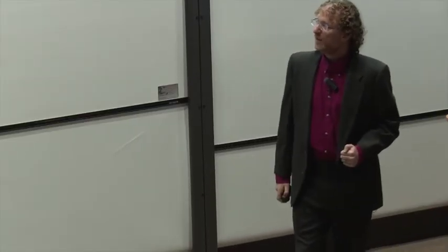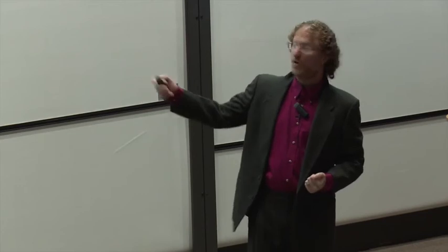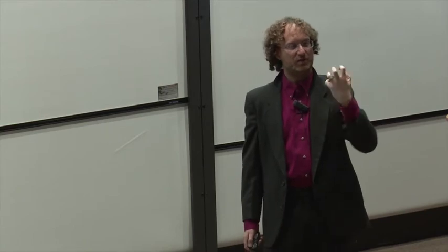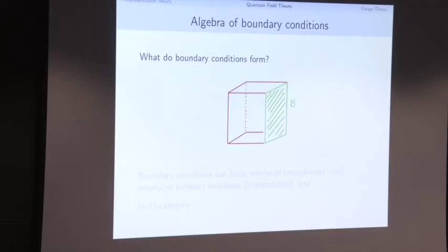Such boundary conditions are a way of producing states. In the two-dimensional theory, states are roughly cohomology of the target, and we know how to produce cohomology classes from submanifolds or vector bundles — by taking the fundamental class or the Chern class. So submanifolds and vector bundles are local expressions that give global things: characteristic classes. This illustrates the idea of a boundary condition.